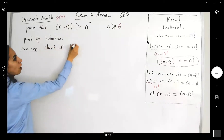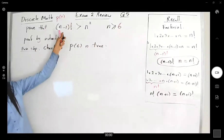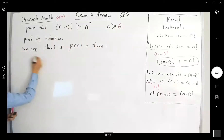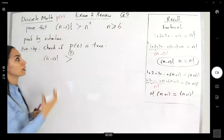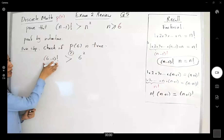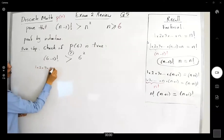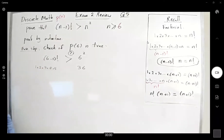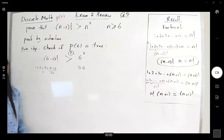Check if P(6) is true. P(6) means if I plug in six for n, six minus one factorial must be greater than six squared. So on the left hand side I have five factorial. Five factorial is one times two times three times four times five. Is this greater than six times six, or 36? Multiplying those numbers together gives 120, which is greater than 36. So I'm happy about my base step.